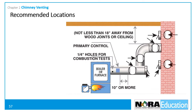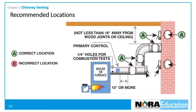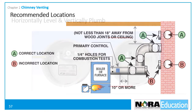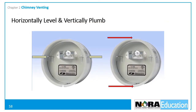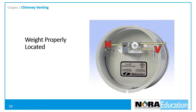There are three main requirements regarding draft controls. First, they must be installed in the proper location — in the diagram, locations marked A are acceptable and locations marked B are not. Second, they must be horizontally level across the pivot points and vertically plumb. Third, if the control has specific weight locations for vertical and horizontal installations, the weight must be in the proper location to operate properly. In this picture, the weight is installed in the correct location for a vertical flue.